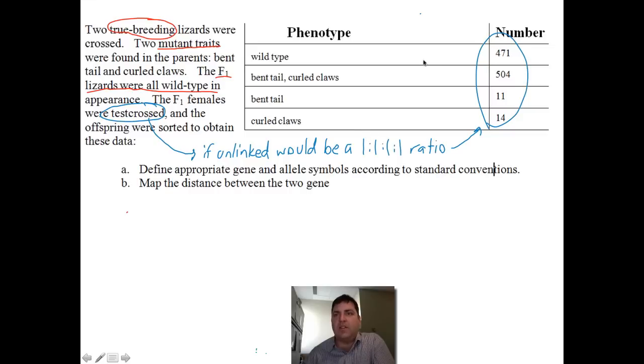And when you look over here, you see that that's totally not the case. We have a higher proportion here and a much lower number here. So that means that the genes are not unlinked, they are linked.